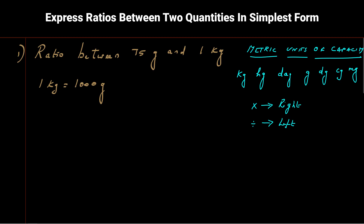From kilogram to gram we make three jumps: kilogram to hectogram, hectogram to decagram, decagram to gram. For each jump we multiply by 10, so 1 kilogram equals 10 hectograms, 1 hectogram equals 10 decagrams, and 1 decagram equals 10 grams. Therefore, to convert kilogram to gram we multiply by 1000 (10 × 10 × 10).